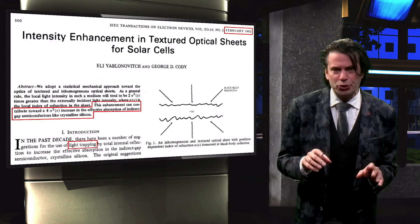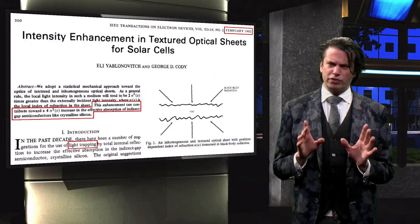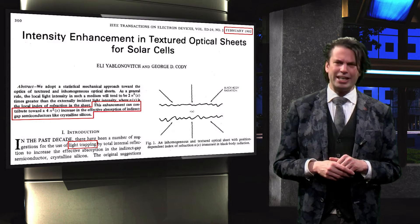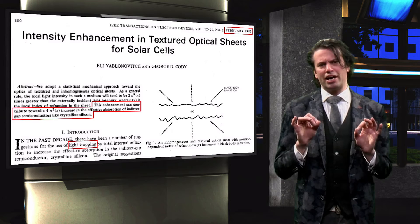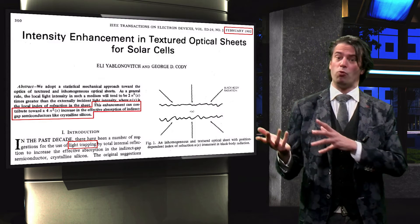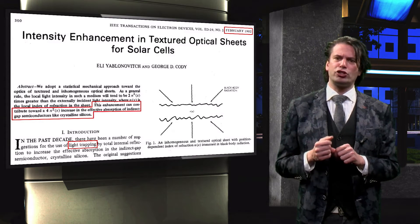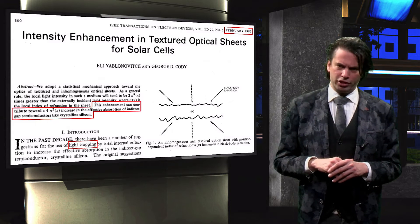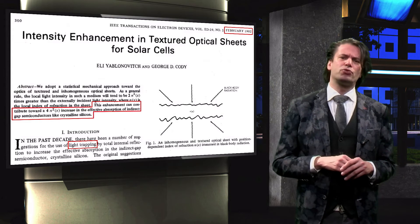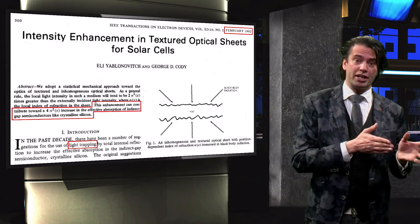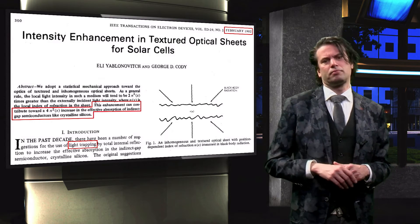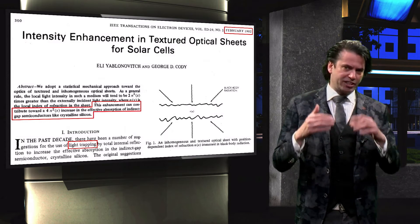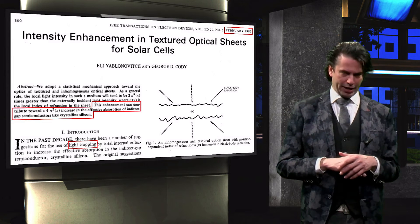In 1982 Eli Yablonovitch was the first to theorize what the maximal intensity absorption enhancement is in a bulk absorbing layer. By assuming that an absorber layer is illuminated from one side, Yablonovitch showed that a maximal absorption enhancement of 4n squared can be achieved. This enhancement requires a Lambertian scatter at the front of the layer and an ideal reflector at the back. The Yablonovitch limit is often used in literature to compare the effectiveness of a certain concept of light management.